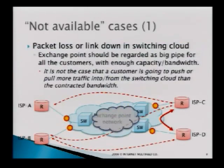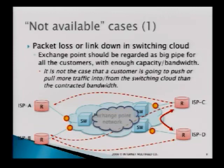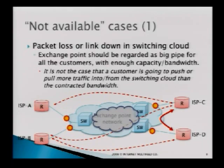Let's imagine not-available cases. One typical one is packet loss or link down in the switching cloud. Our exchange point should be regarded as a big pipe for all customers with enough capacity and bandwidth. The exchange point provider must maintain no packet loss and no link failure. If there is some packet loss or link down, the network is defined as not available.